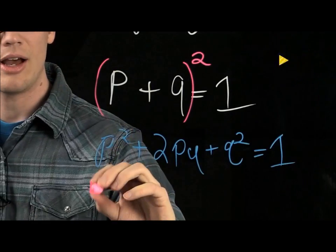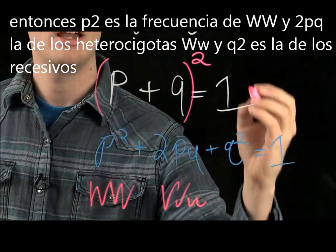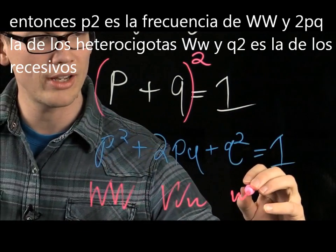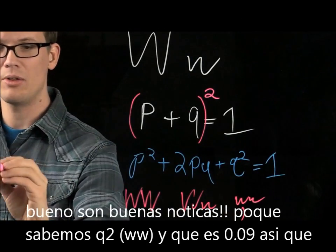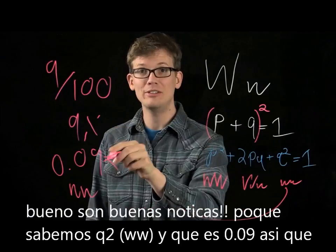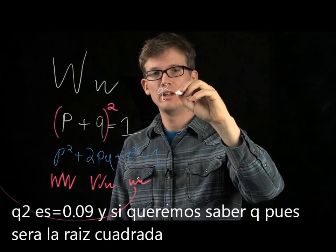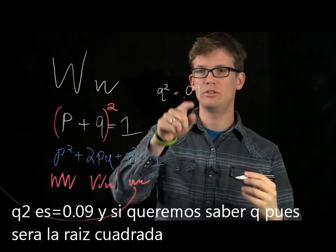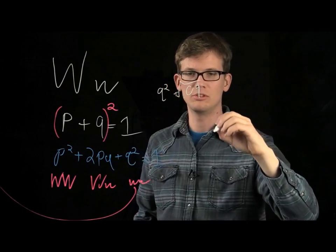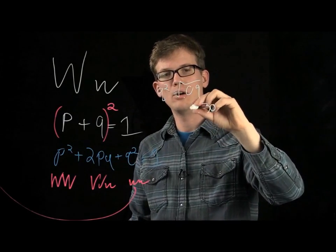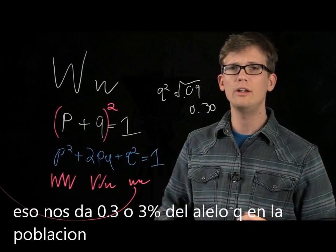Well, good news. We know ww — we know the homozygous recessive is 0.09. So we already have that information: we know what q squared is, it's 0.09. And in order to get what q is, we just take the square root of that, which is 0.30, or 30% — a 30% frequency of the q allele in the population.